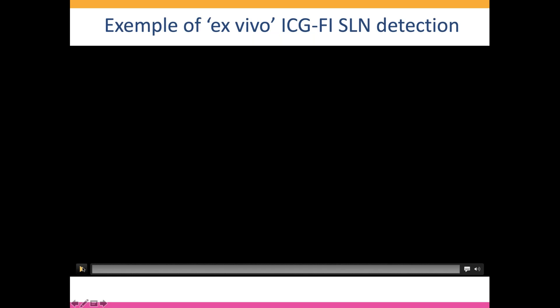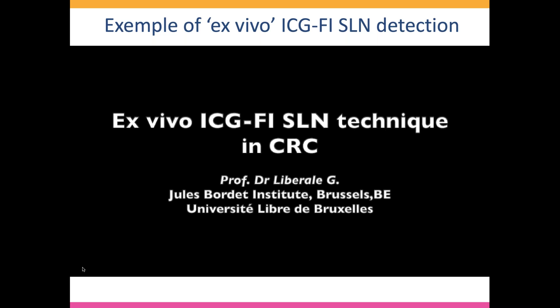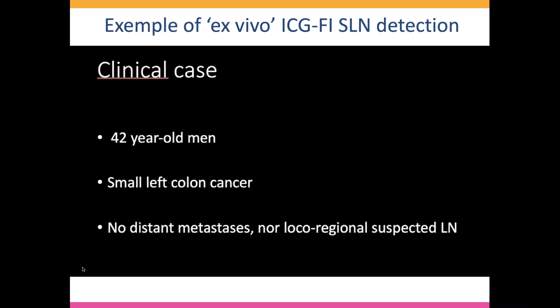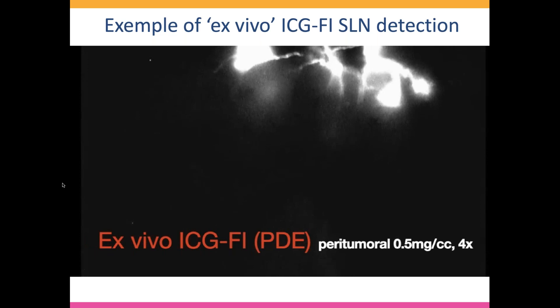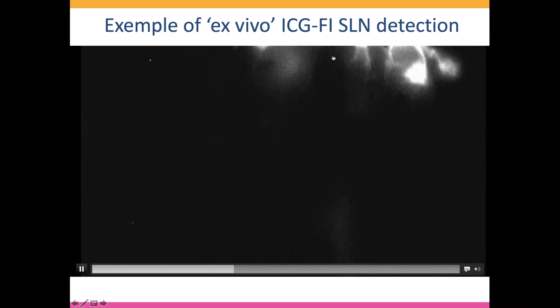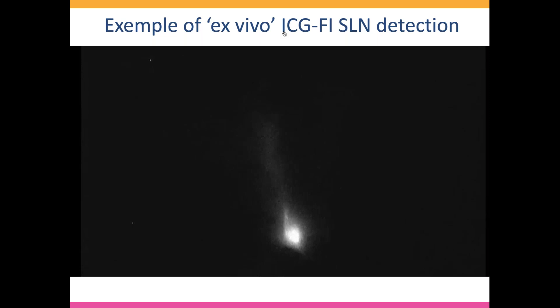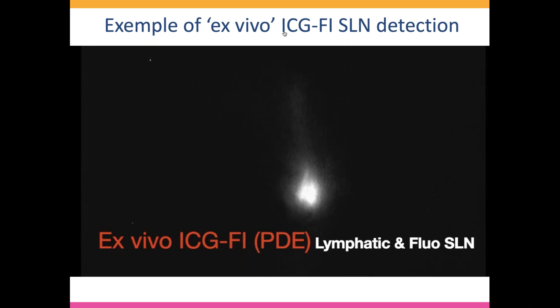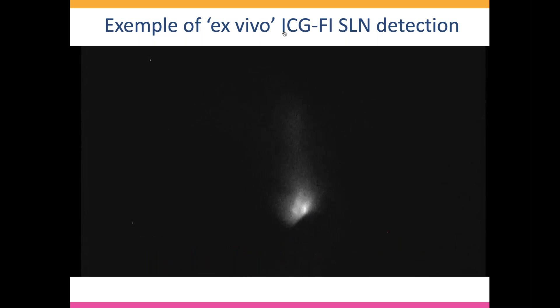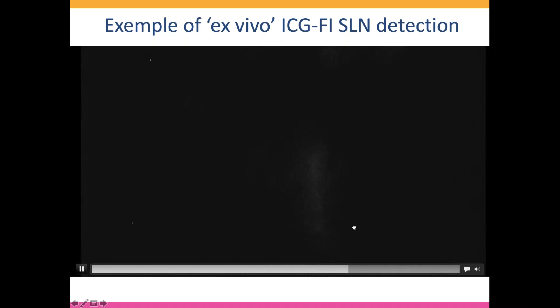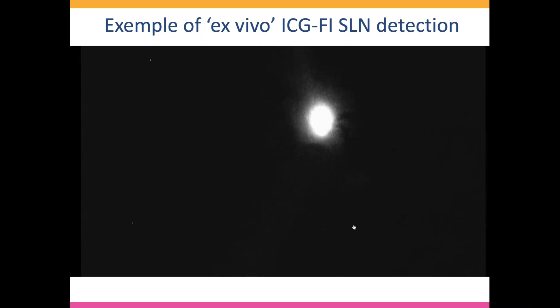Here is an example of the technique: an ex vivo ICG fluorescence imaging sentinel lymph node technique using peritumoral injection. This is the case of a young man with a small left colon cancer, no distant metastasis, no locally suspect lymph node. We see here the different hotspots around the tumor from the peritumoral injection. After waiting several minutes and palpating the tumor to activate mobilization of ICG in the lymphatics, we see the big hotspot corresponding to the fluorescent sentinel lymph node, which is then marked with a blue stitch for detailed pathology analysis using serial section.